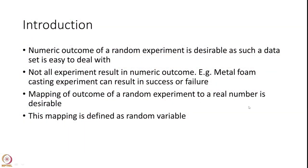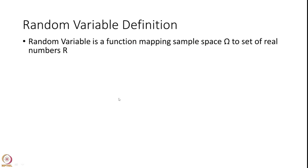So it is not necessary that every time the experiment results in numeric data. However, having a numeric outcome or mapping the outcome into a numeric value is of immense help and it is desirable, because that way we are able to do a lot of analysis on the data. Therefore, this mapping — a mapping of the outcome of a random experiment to a real number — is what we call a random variable. So let us formally define it.